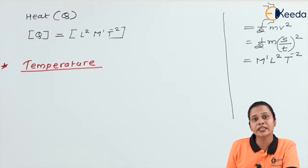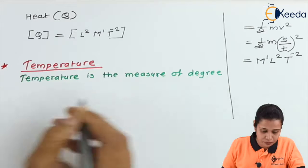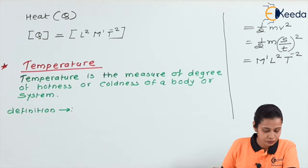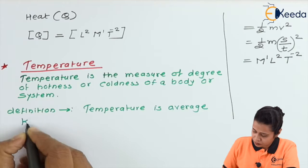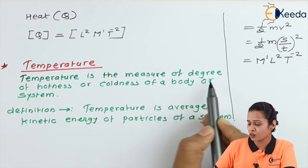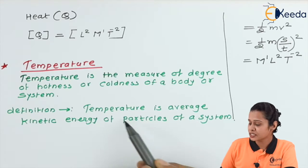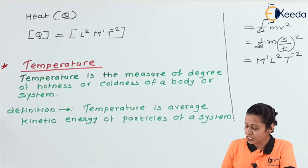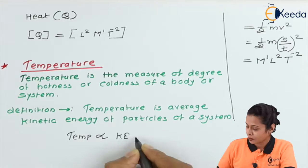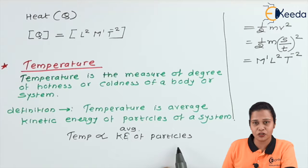Heat is a cause but temperature is an effect. Temperature is the measure of the degree of hotness or coldness of a body or given system. The definition of temperature is: temperature is the average kinetic energy of the particles of the system. So temperature is directly proportional to the average kinetic energy of the particles in the system.